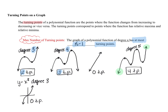Our second graph was degree 4 and had three turning points. However, the basic power function y equals x to the fourth is also a degree 4 polynomial. If you look at its graph, it has just a U shape — it decreases and then increases, meaning it only has one turning point. So just because it's degree 4 doesn't mean it has to have three turning points; it means the graph will have at most three turning points. The maximum number of possible turning points for a degree n polynomial is n minus one.